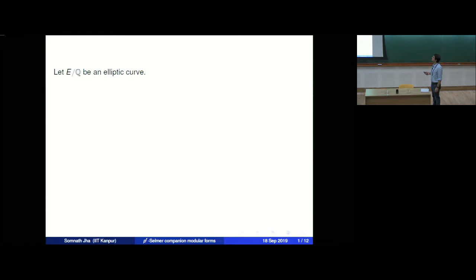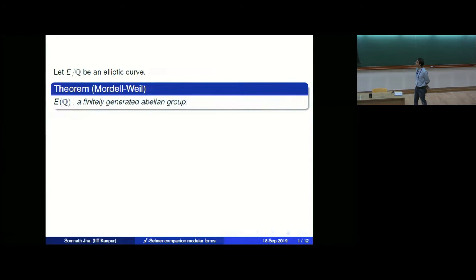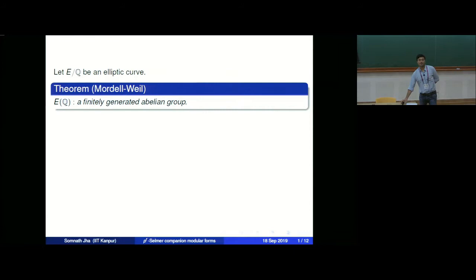Let E over Q be an elliptic curve. Then we know that the Q-rational points E(Q) is a finitely generated abelian group — that's Mordell's theorem, and more generally for any number field it's the Mordell-Weil theorem. The way the proof works is we first prove the weak Mordell-Weil theorem: E(Q) mod n·E(Q) injects into what is called the n-Selmer group, which is shown to be finite.